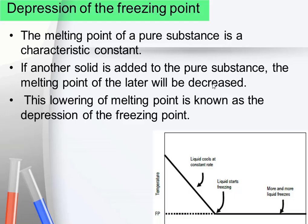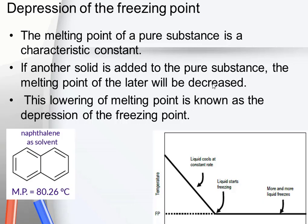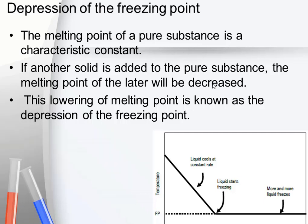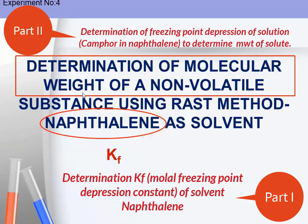We know that the freezing point is a characteristic feature of a compound, and here we are going to see how the addition of a substance changes the freezing point of a solvent. We are using naphthalene as a solvent and adding camphor as a solute, and this colligative property is used for finding out the molar mass of the substance.